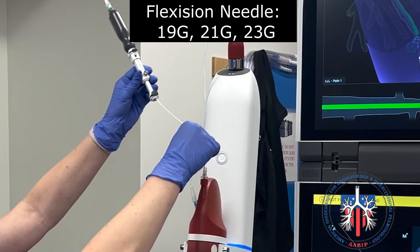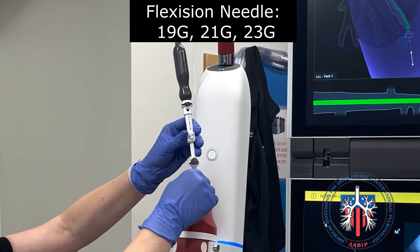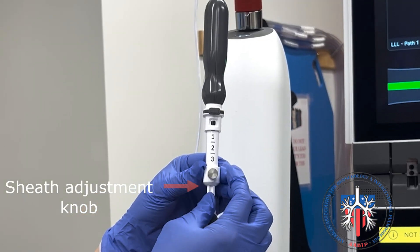When using an ION biopsy needle, make sure to adjust the sheath tip just outside of the robotic catheter.